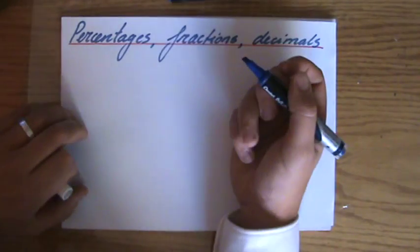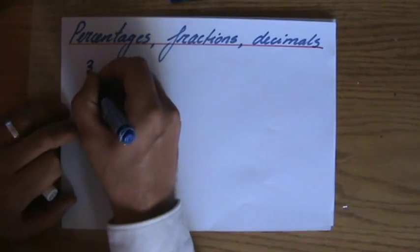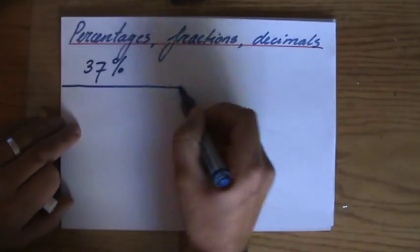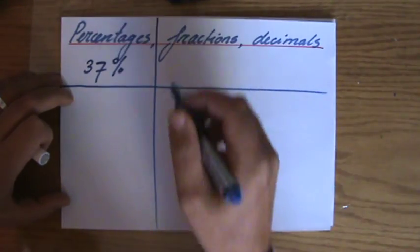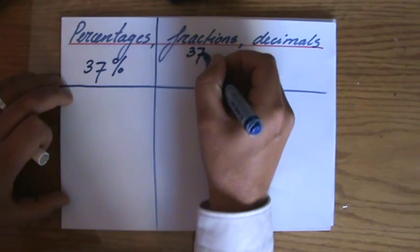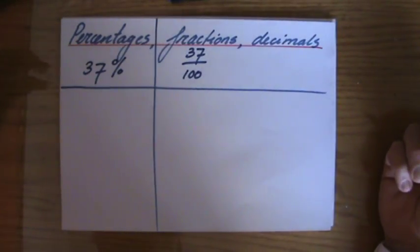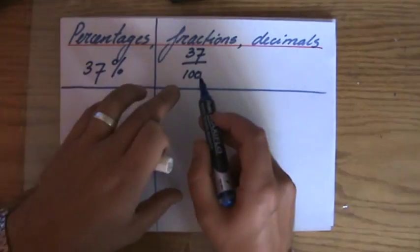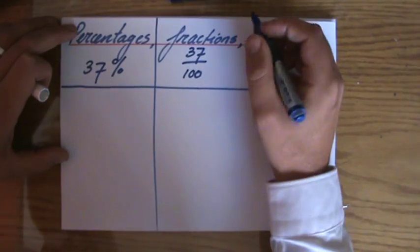So if I have, for instance, the percentage 37%, that means 37 out of a hundred. So if I would have to write that as a fraction, that would be 37 out of a hundred. These two things mean the same. 37% equals 37 out of a hundred. Please note, there's no percentage sign here anymore.